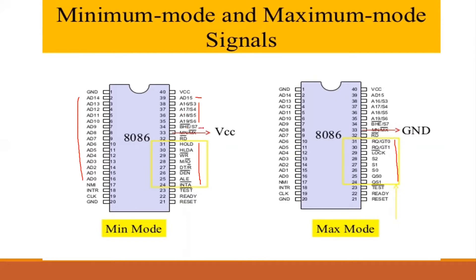The BHE (Bus High Enable) pin enables the bus in the segment. This is called the Minimum Mode–Maximum Mode denotation.